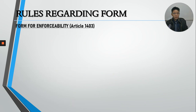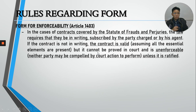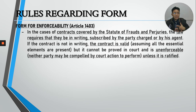Form for enforceability is covered by Article 1403, which talks about unenforceable contracts. Specifically, we are discussing paragraph 2 of Article 1403, which is known as the Statute of Frauds and Perjuries. The Statute of Frauds and Perjuries requires that the agreements enumerated in the statute be in writing — these will be studied further when we go to Chapter 8.